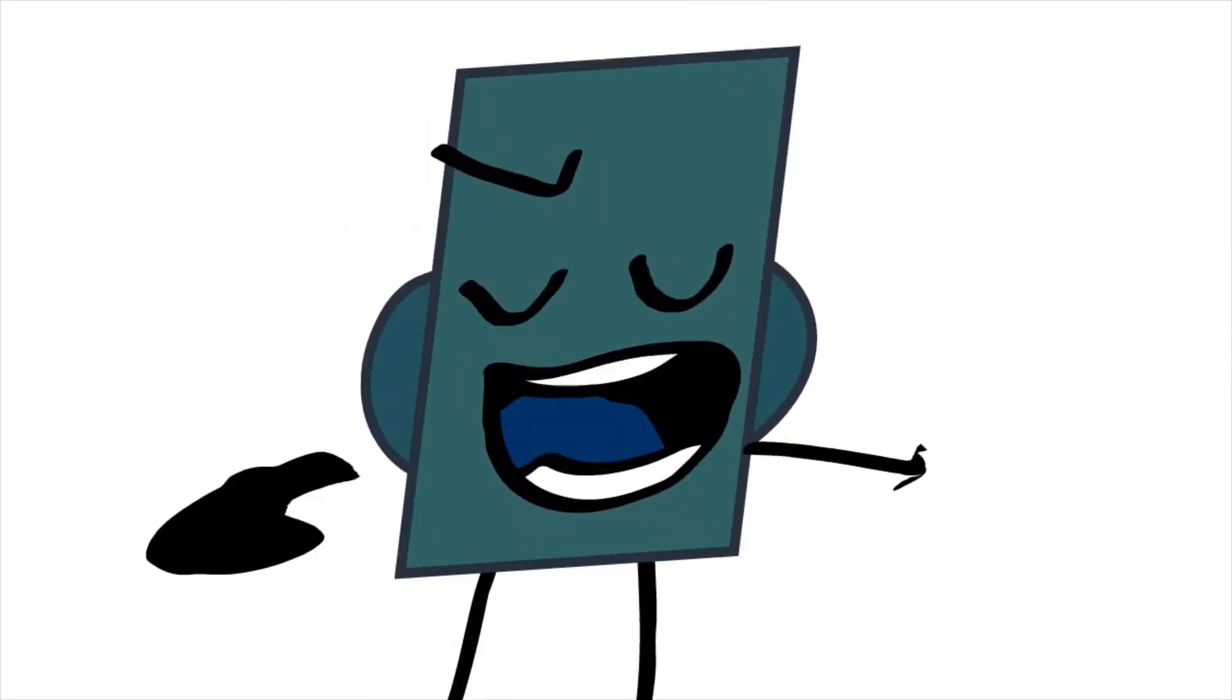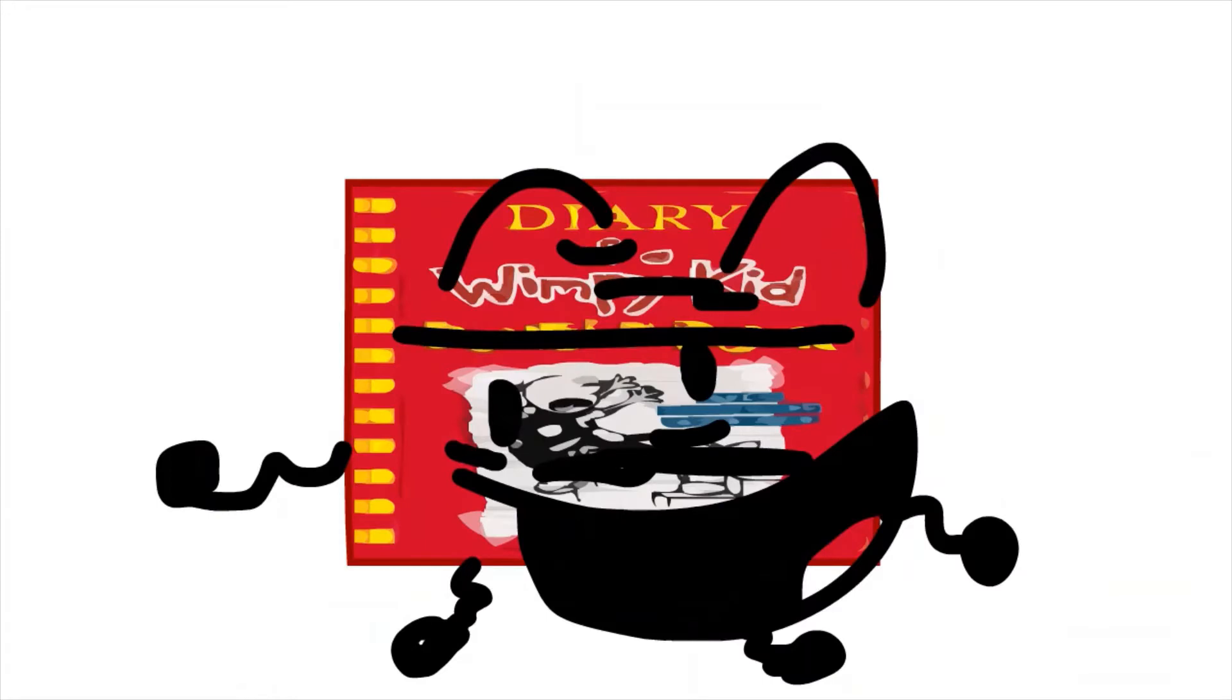Now it's time to Purple Eraser and Daryl Wimpy Kid Double Down. I mean, it's obviously going to be Purple Eraser. He hasn't had any lines and he sleeps all day. Well, guess what? Purple Eraser is safe with one vote and you're eliminated with three!